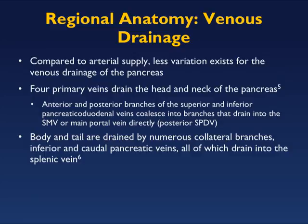Venous drainage shows less variation: portal vein, SMV, and splenic vein. The body and tail are drained by numerous collateral branches — the inferior and caudal pancreatic veins — all draining into the splenic vein. When tumor or inflammation is present in the tail of the pancreas, it's not uncommon to see invasion or occlusion of the splenic vein with significant collaterals developing.